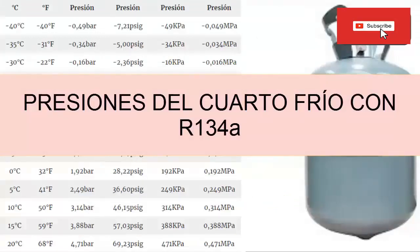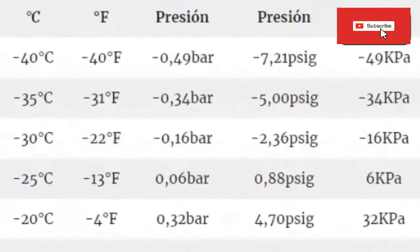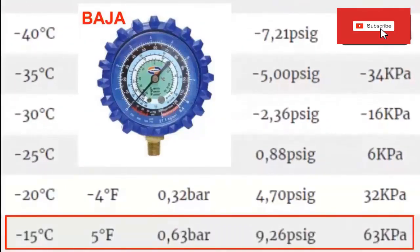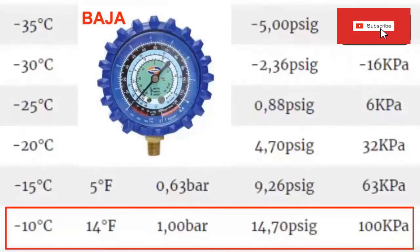The most used R134A refrigerant gas pressures are as follows. To reach a temperature of minus 20 degrees Celsius in the evaporator, equivalent to minus 4 degrees Fahrenheit. To achieve a temperature of minus 15 degrees Celsius, equivalent to 5 degrees Fahrenheit, a low gauge pressure of 0.63 bars is needed, equivalent to 9.26 PSIG or 63 kilopascals. To reach a temperature of minus 10 degrees Celsius, equivalent to 14 degrees Fahrenheit, a low gauge pressure of 1 bar is needed, equivalent to 14.70 PSIG or 100 kilopascals.